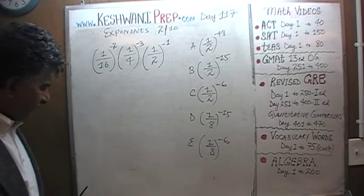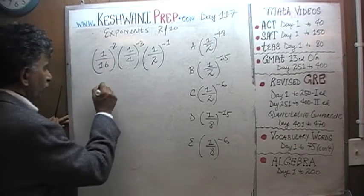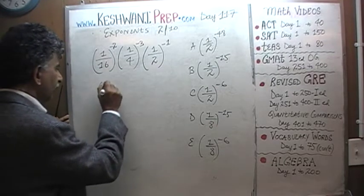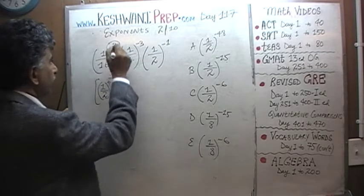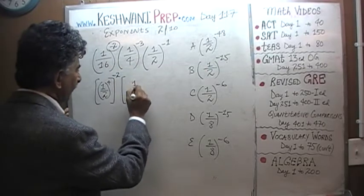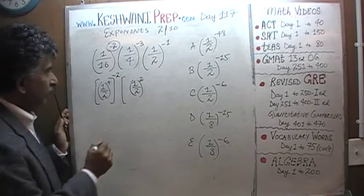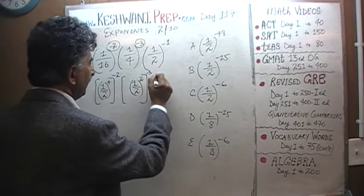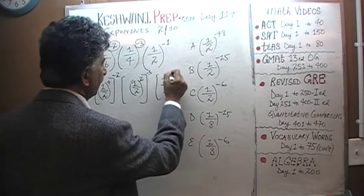Alright. We have 1 sixteenth here. 1 sixteenth can be written as 1 over 2 raised to 4. That's 1 sixteenth, and then outside we have the power of negative 2. Similarly, 1 fourth can be written as 1 half raised to 2. And then outside we have the power of negative 3. And then finally we have 1 half raised to negative 1.